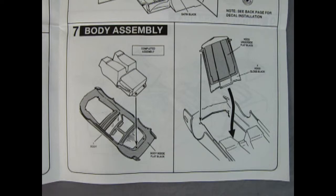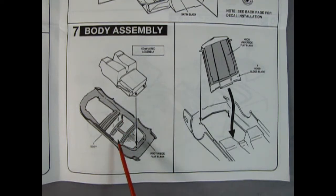Step 7 is our body assembly and this is quite straightforward. The interior bucket tub that's all complete now drops into place inside our body and then we have our underside hood as well which will just pop into place and those little pins fit into little grooves under the body.